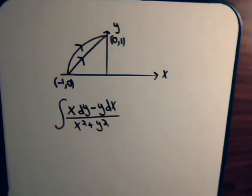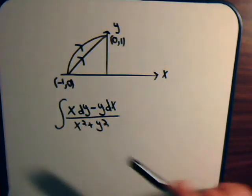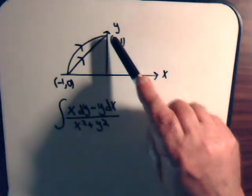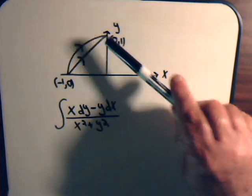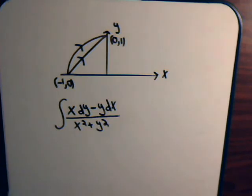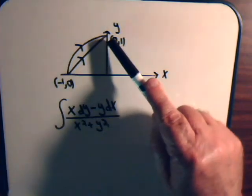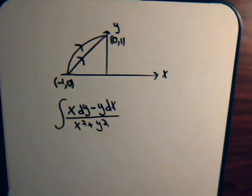In this video we're going to evaluate a line integral about two different curves. In each instance we're starting at a point where x is minus one, y is zero, and then going to where x is zero and y is one. In the first one we're going about a curve that is one fourth of a circle with radius one. Let's consider the circle first.